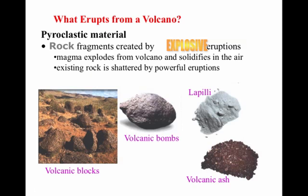What erupts from a volcano? Well, of course lava, but other things come out too. Pyroclastic material is super dangerous and may erupt from a volcano, causing often lots of deaths. Pyroclastic material is rock fragments created mostly by explosive eruptions — magma explodes, solidifies in the air, existing rock is shattered, and these are really powerful eruptions. They can almost become bombs, and sometimes ash and even more broken-down ash called lapilli.